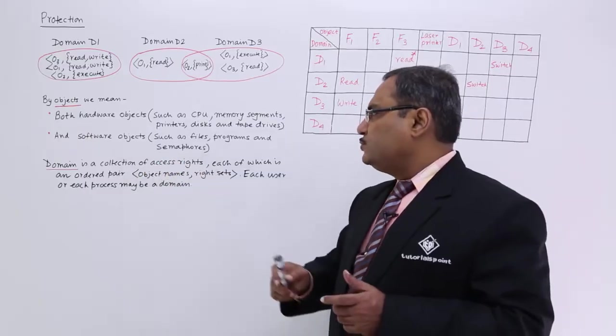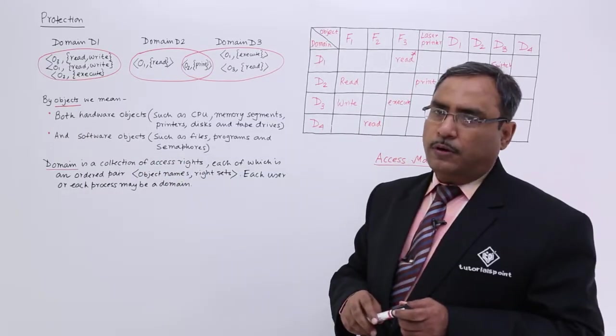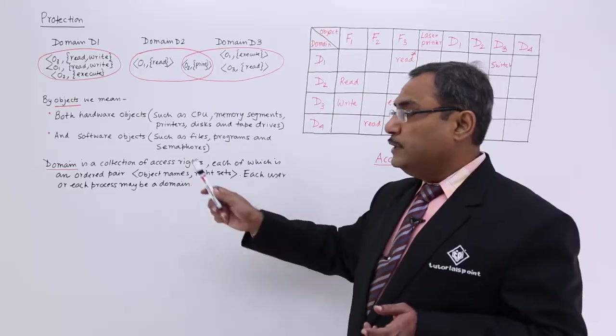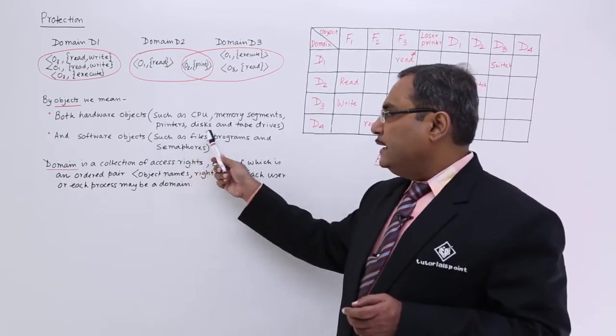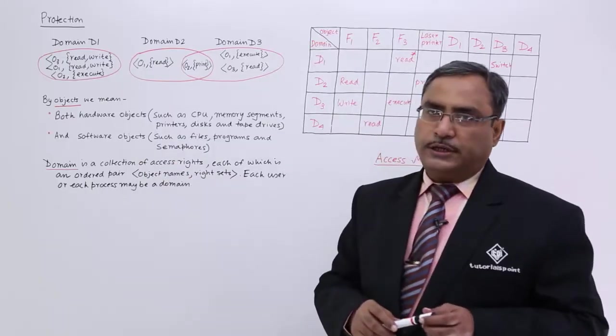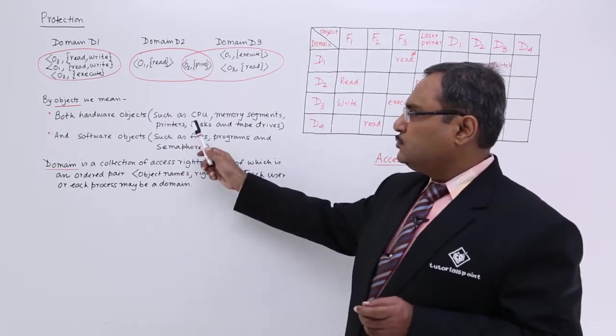In case of software objects, we can go for files, we can go for programs, we can go for semaphore. Semaphore is a synchronization tool. So, semaphore and these things will be known as the software objects. So, objects we have got the idea.